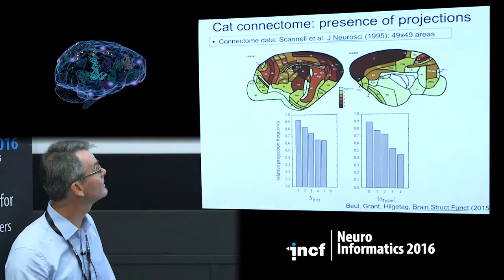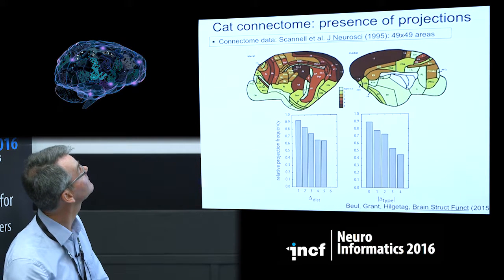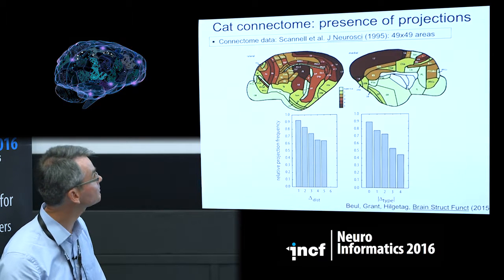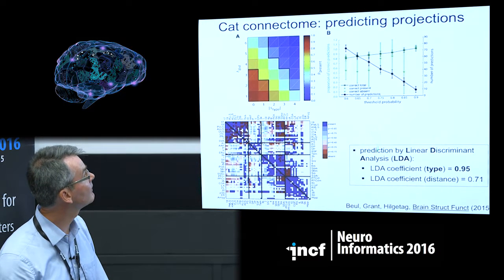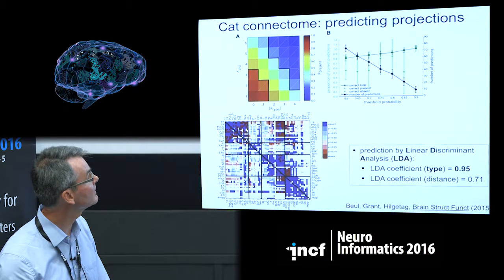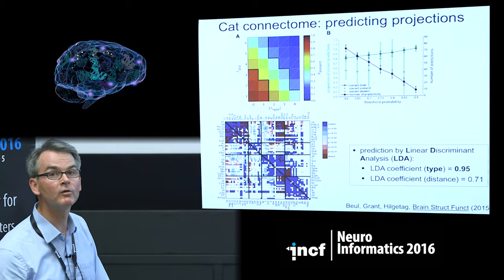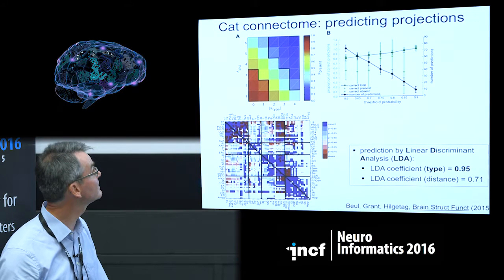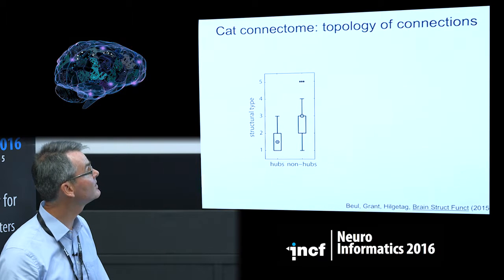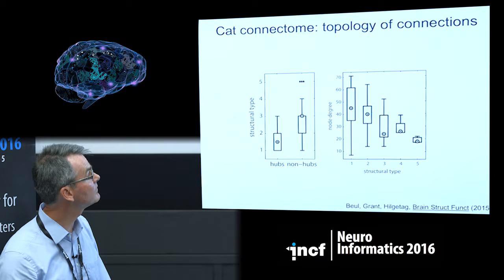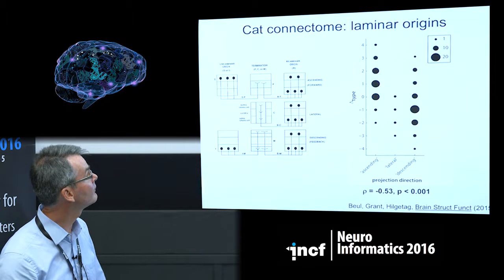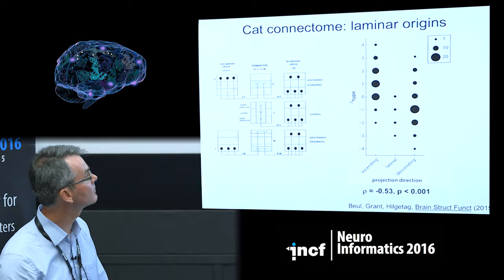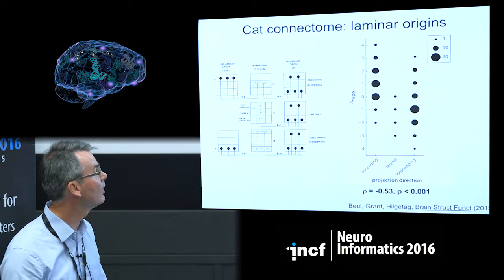Very briefly, almost identical results were found in a cat connectome based on the Scannell et al. dataset: perfect rank correlations with distance and type difference, high predictive values — somewhat higher for type difference than distance — which allowed quite reliable predictions including for pathways not yet tested. Once again, hub areas generally have a lower type compared to non-hub areas with a higher type, expressing the general relationship where higher-type areas with more layers and higher neuronal density have fewer connections than more limbic areas. Projections from higher-type to lower-type areas form ascending or forward pathways, while feedback pathways come from lower-type to higher-type areas — almost identical results to the monkey.